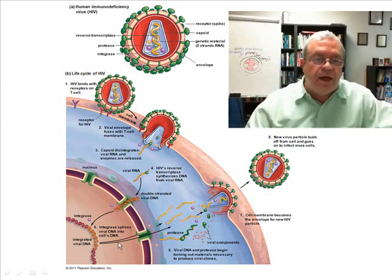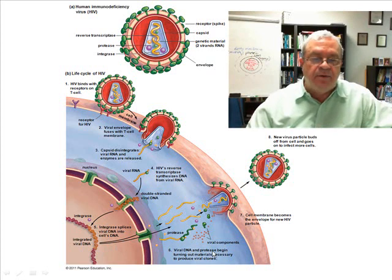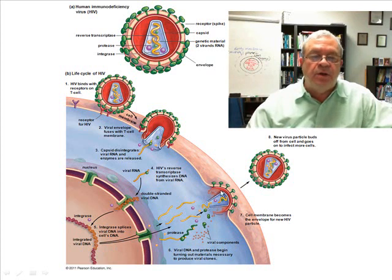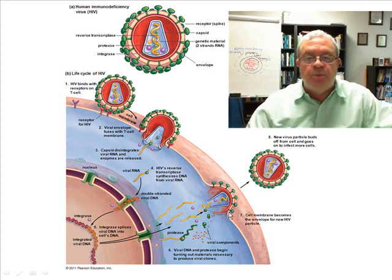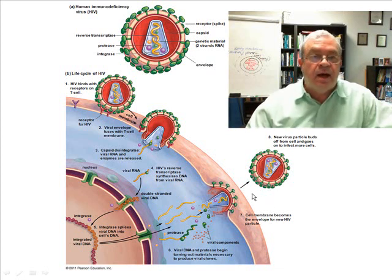Something may trigger the viral DNA into action. When it does, it combines with the protease enzyme — the viral DNA and the protease enzyme combined to start cranking out viral parts and viral components, which are put together to form a new virus particle. What becomes the envelope of the new viral particle? The cell membrane becomes the envelope of the new HIV particle. And that is how the HIV virus does its horrific work.